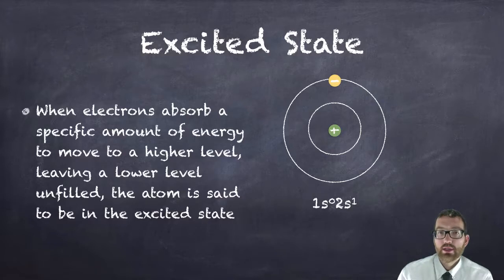1s0 because there's no electron in the first energy shell, the first sublevel. 2s1, that electron left the first and went into the second orbital in the second principal energy level.